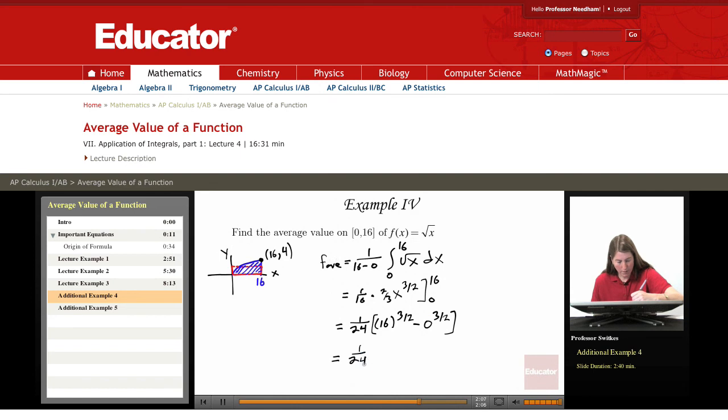So we have 1 over 24 times 16 to the 3 halves is square root of 16 cubed. So that's 4 cubed, which is 64. And then we're subtracting off the 0. So we have 64 over 24. We can divide top and bottom by 8 and get 8 thirds.